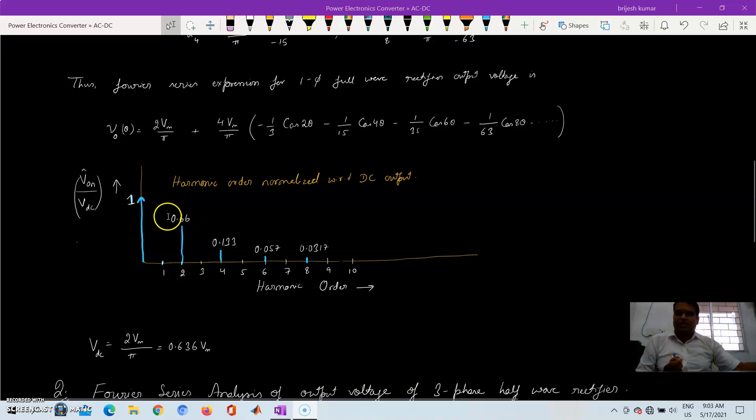And then there is a second order harmonic which is 66% of the DC and then the 4th order which is 13.3% of DC. 6th order, not 5th, 6th order that is 5.7% of DC and then 8th order which is 3.17% of DC.